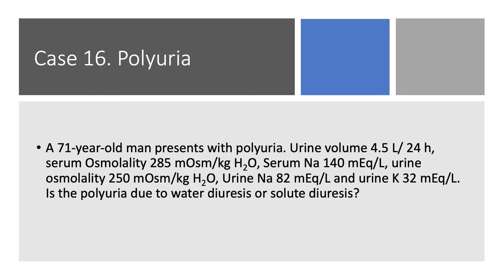Do we have polyuria? Yes. Do we have urine volume above 3 liters? Yes, it's 4.5. Look at urine sodium and look at urine potassium — they're high, so you can just tell by looking that this is solute diuresis because you have a lot of salt, a lot of sodium. Now is urine osmolality low at 250? Well, yes, if we had one liter, but here we have 4.5 liters of urine. So the total osmoles in the urine is 250 times 4.5, which is about 1200 milliosmol per 24 hours. So this person is eating a lot of salt.